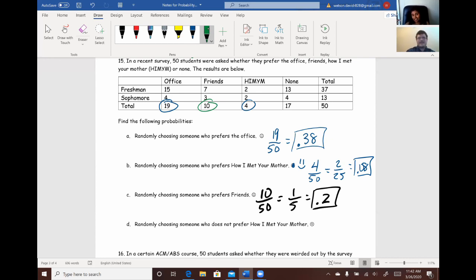So, again, better chance of finding somebody who likes Friends over How I Met Your Mother. Sorry, How I Met Your Mother fans. All right. So, part D. Randomly choosing someone who does not prefer How I Met Your Mother. And I like how there's already a frowning face on that one. Because the people who do not prefer How I Met Your Mother deserve those frowns. All right. So, for this one, we already know that we have a 0.08 probability of finding somebody who prefers How I Met Your Mother.